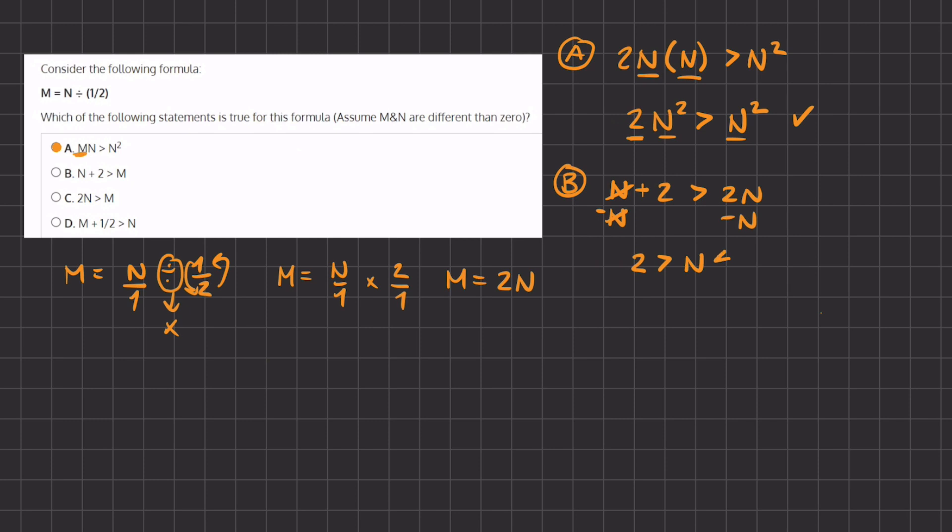Now because we don't know the value of N, and we know that it is different than 0, it can be any possible number, and therefore we cannot state that this statement is true, because it is not sufficient. So B is incorrect.